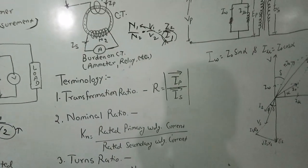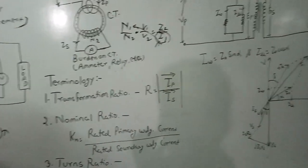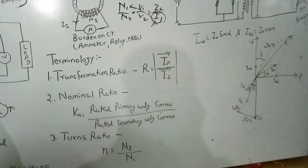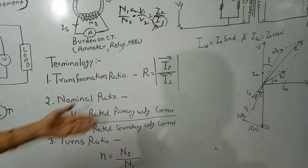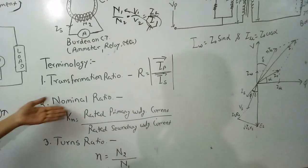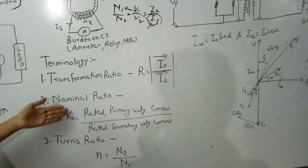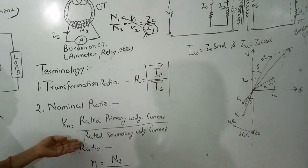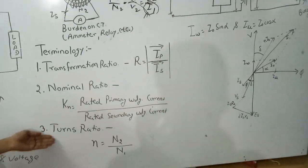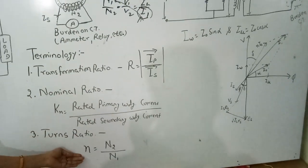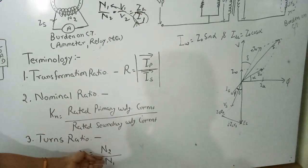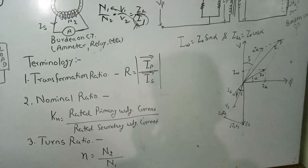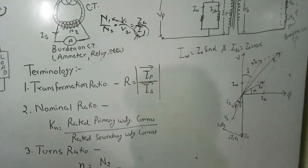There are several terminology terms used in current transformers. First is the transformation ratio, defined as the primary phasor current to the secondary phasor current. Second is the nominal ratio, defined as the rated primary winding current to the rated secondary winding current. Turns ratio is denoted by small n and equals N2/N1, which is the actual number of turns in the secondary to the primary winding.